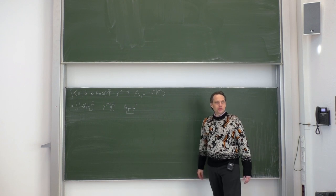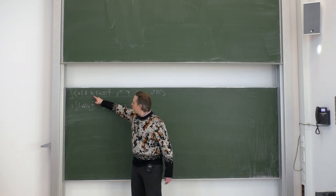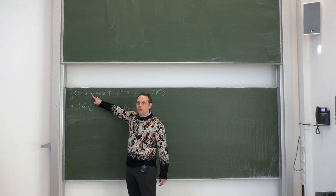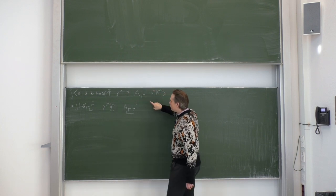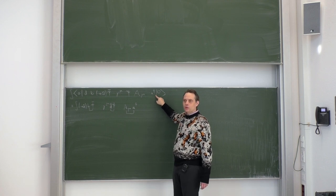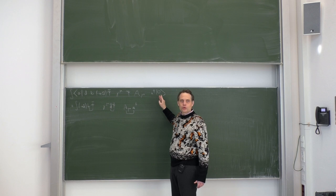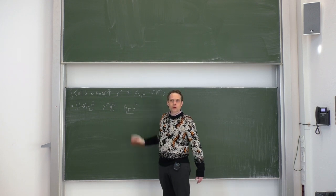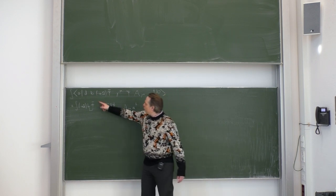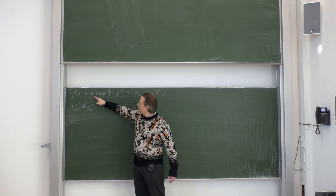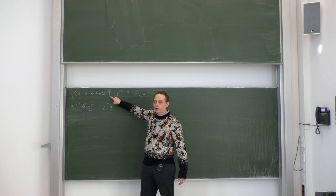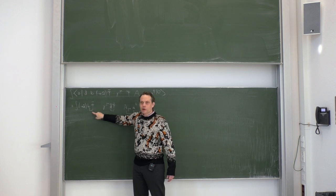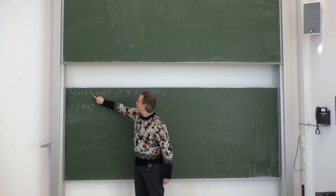What we need to do is take any annihilation operators, which automatically appear on the very left, and use commutation or anti-commutation relations until the annihilation operators are on the far right. Then they act onto the vacuum and give zero. Therefore the only non-zero terms arise from particular commutators or anti-commutators. For the B annihilation operator for the electron, there is exactly one anti-commutator which is non-zero, namely the one between B and psi-bar, which we write as a contraction rule with this new notation.